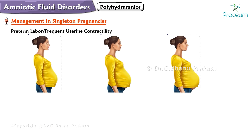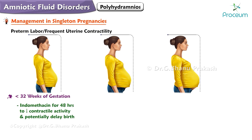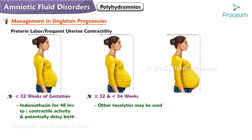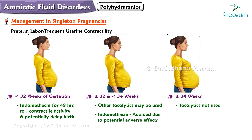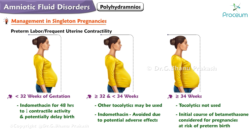For management of patients with preterm labor or frequent uterine contractility: at less than 32 weeks of gestation, prescribe indomethacin for 48 hours to reduce contractile activity and potentially delay birth. At greater than or equal to 32 weeks and less than 34 weeks, other tocolytics may be used, as indomethacin is avoided due to potential adverse effects. At greater than or equal to 34 weeks, tocolytics are not used. An initial course of betamethasone is considered for pregnancies at risk of preterm birth.